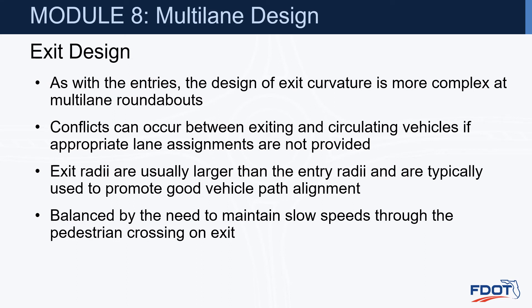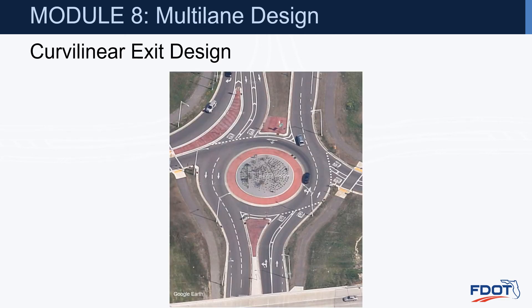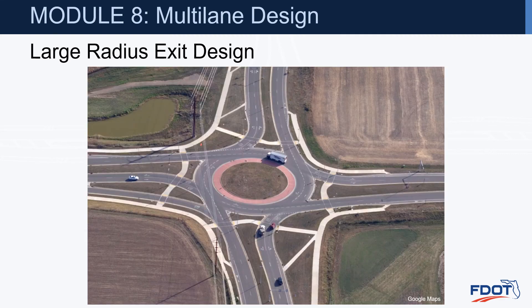Exit design. As with entries, the design of exit curvature is more complex at multilane roundabouts. Conflicts can occur between exiting and circulating vehicles if appropriate lane assignments are not provided. Exit radii are usually larger than entry radii and are typically used to promote good vehicle path alignment, balanced against the need to maintain slow speeds through the pedestrian crossing on exit. A curvilinear exit design adds curvature, while a larger-radius exit provides good sight of the crosswalk with no exit path overlap but results in higher exit speeds.